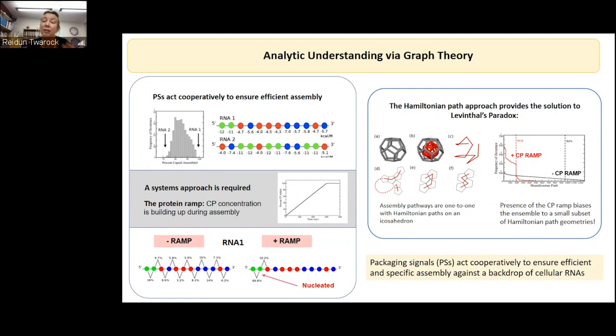Using Hamiltonian paths and combinatorics helps understand what's going on. A graph on the x-axis shows different types of Hamiltonian paths on an icosahedron; on the y-axis, how many occur in these simulations. With the ramp, there is a very strong bias to a small number of Hamiltonian paths — very similar geometries, often small differences between them. Without the ramp, there is a much wider distribution of different build-ups. This reveals how the mechanism actually works, which is very important if you want to exploit it, for instance by coding it into genomes to improve assembly for certain applications.